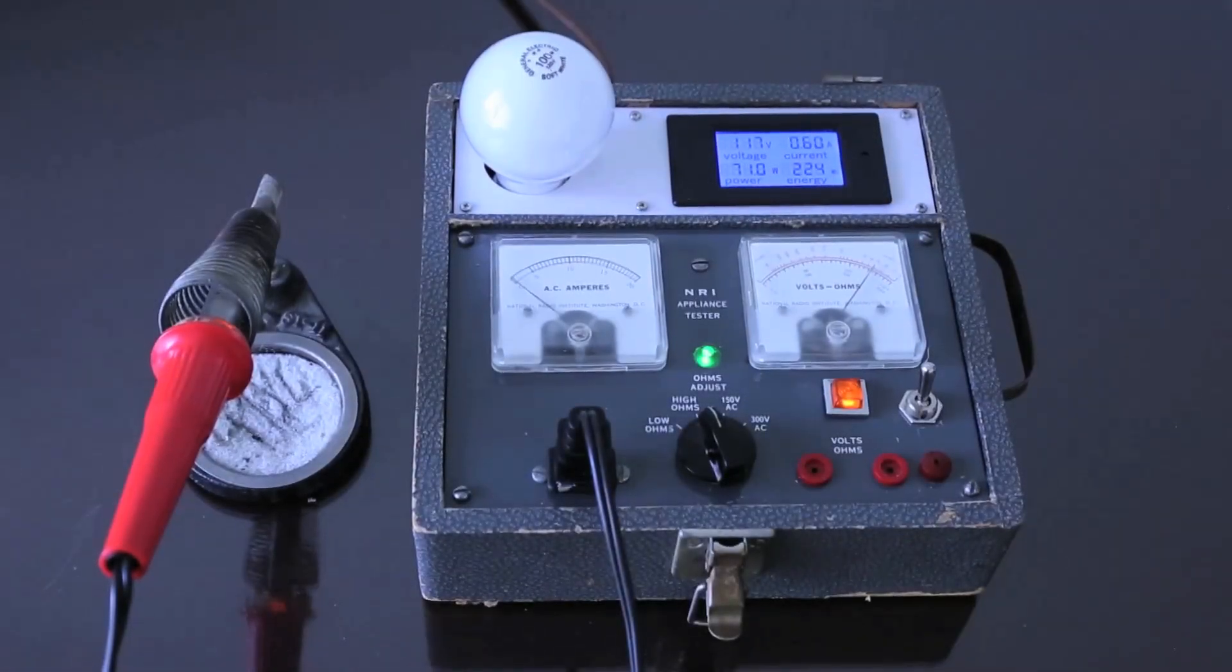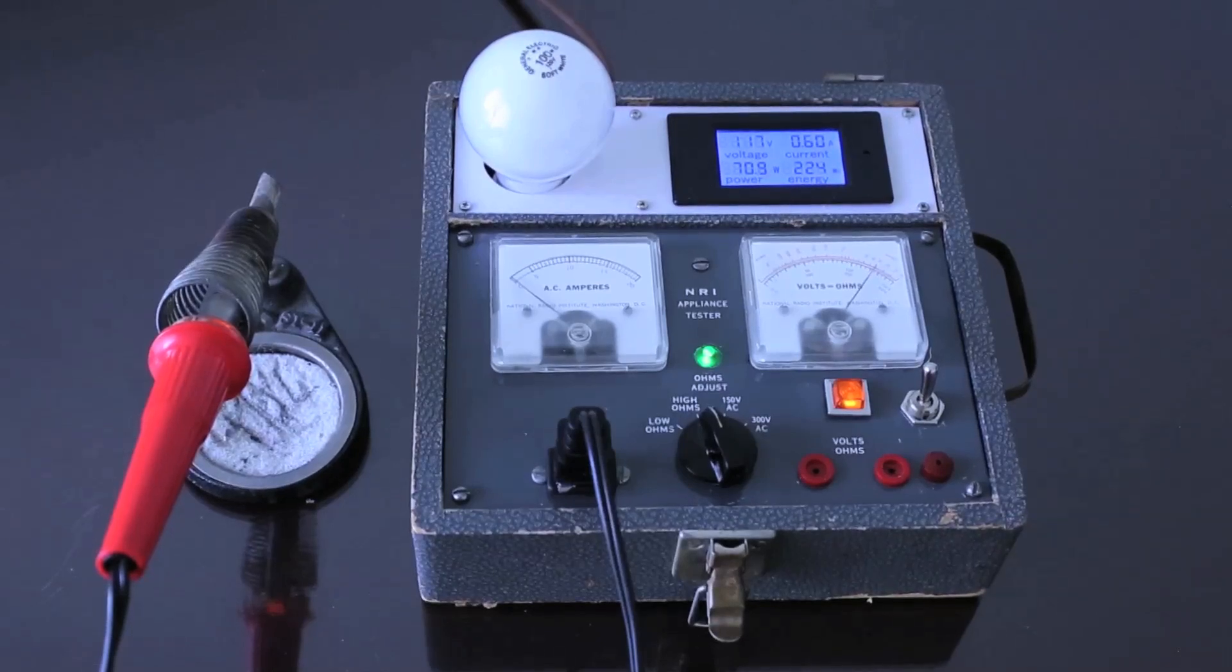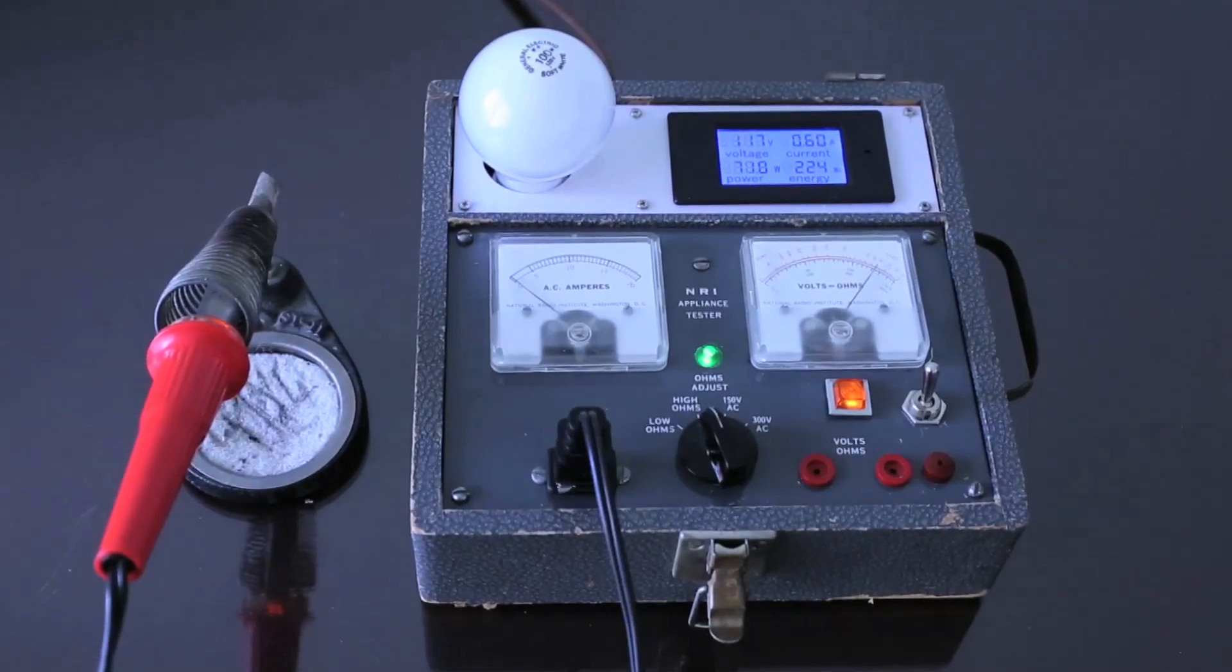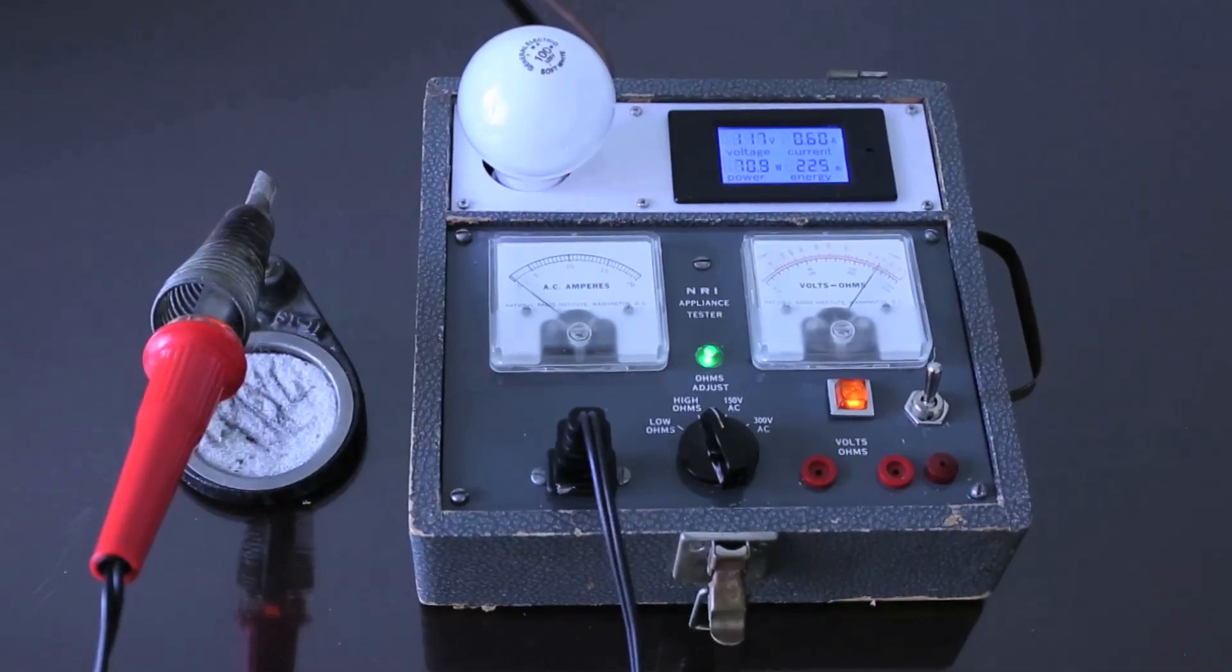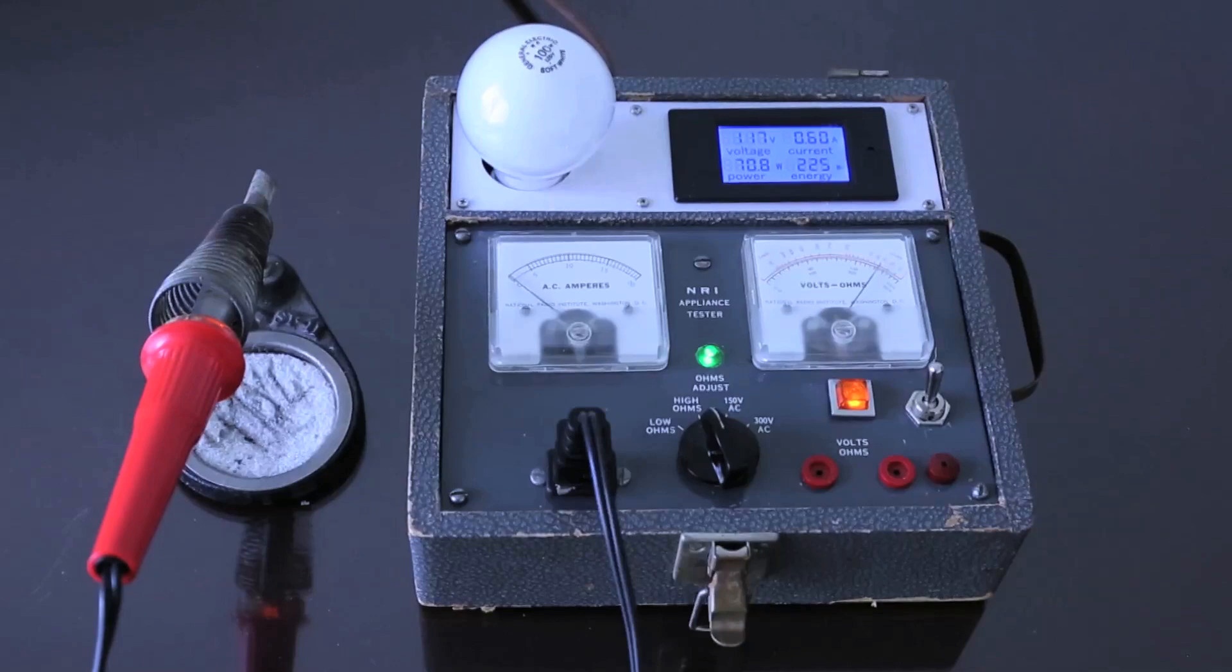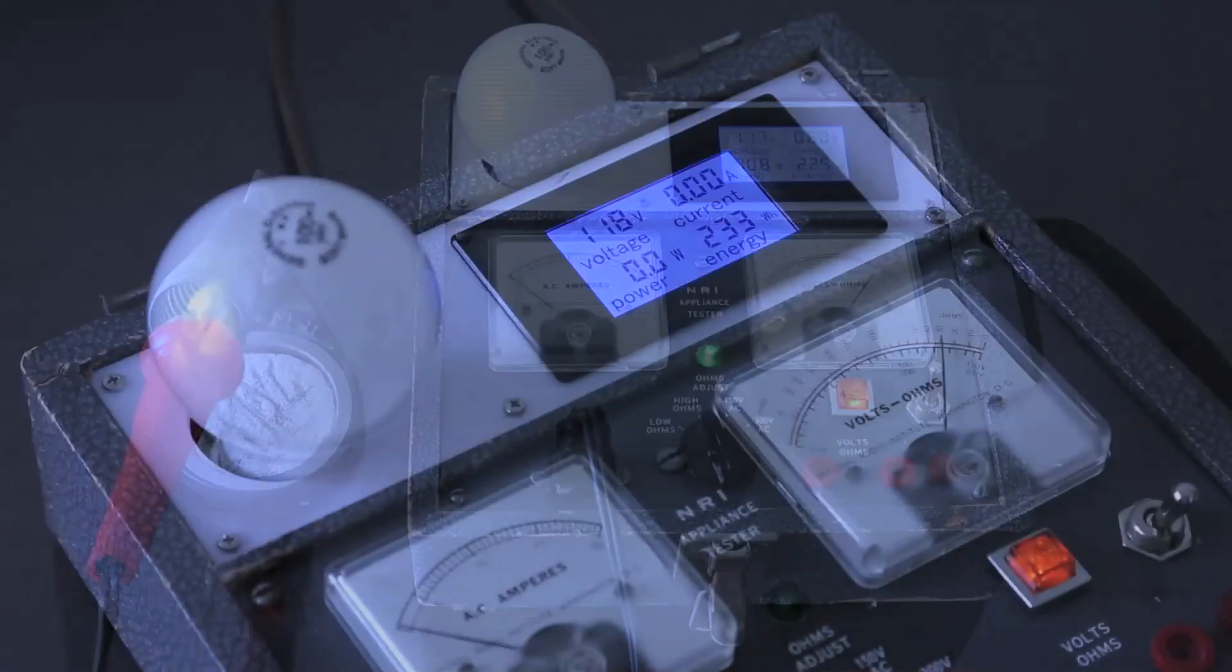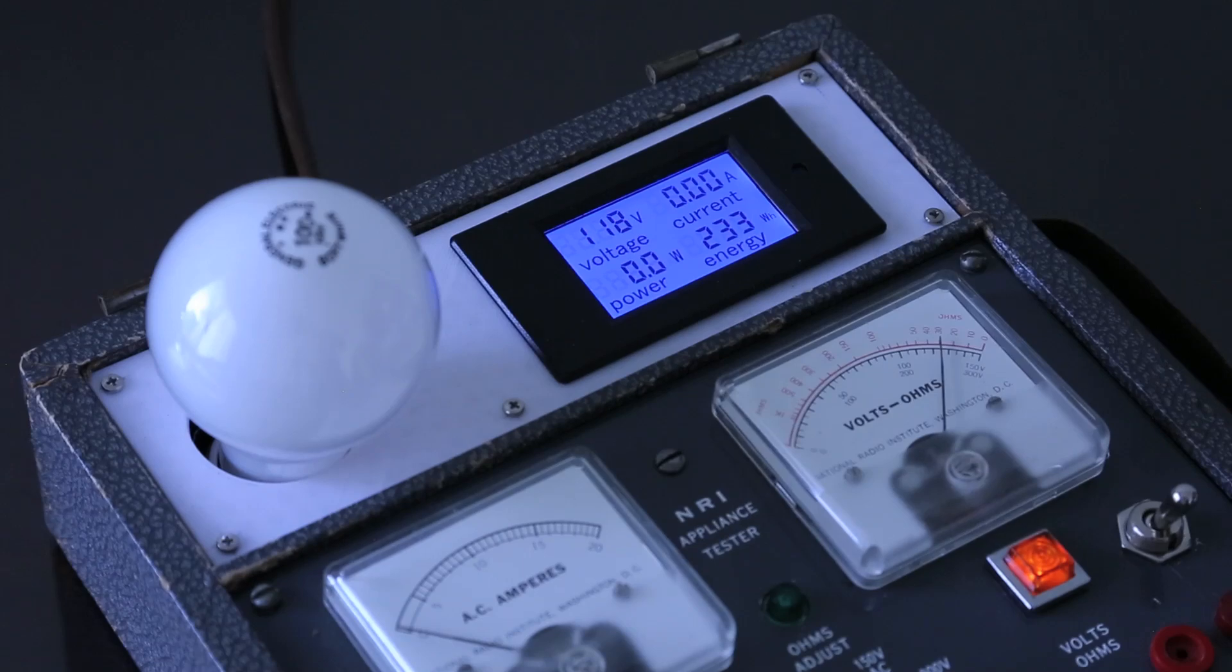I'll give you another example. I have a soldering iron. According to the spec, it's 80 watts. Let's see what happens with 100 watt bulb in the tester.